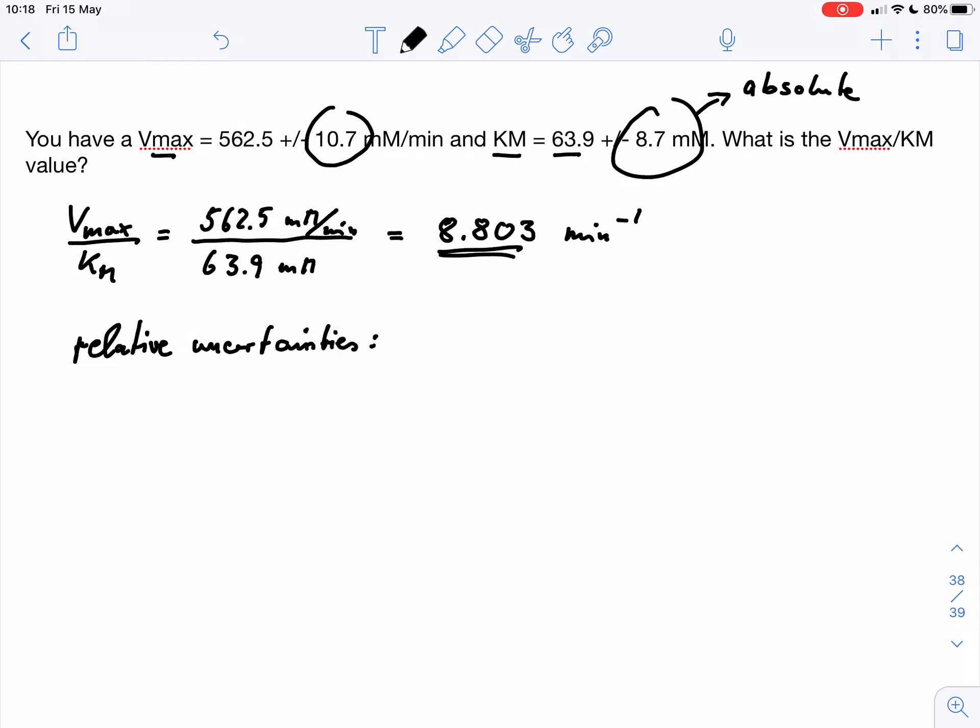This just simply tells us the percentage of this uncertainty compared to the measured value. So we can calculate the relative uncertainties for our first measurement. This would be 10.7 divided by 562.5. Obviously the units cancel out. If we put this in our calculator, we would get 0.019. Or if we multiply it by 100, we would get 1.9%. So that's our relative uncertainty for the first measurement.